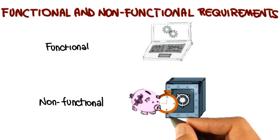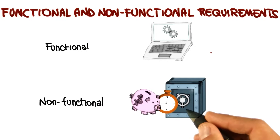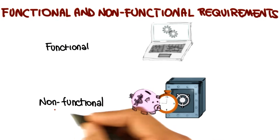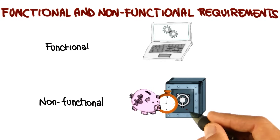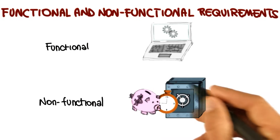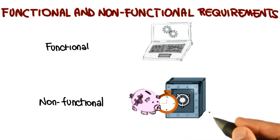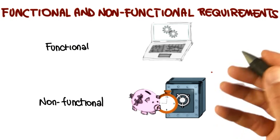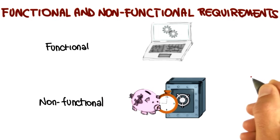And unlike functional requirements, non-functional requirements do not always have clear satisfaction criteria. For example, if we say that the elevator must be fast, that's a non-functional requirement — it has to do with the speed of the elevator, which is a quality of the elevator. But it is not clear how such a requirement could be satisfied; how can we tell whether the elevator is fast or not? So what we need to do in these cases is refine these requirements so that they become verifiable.